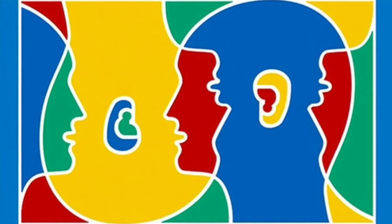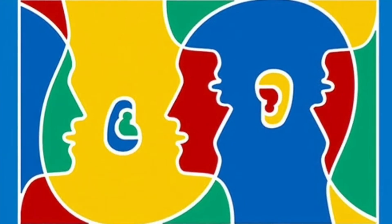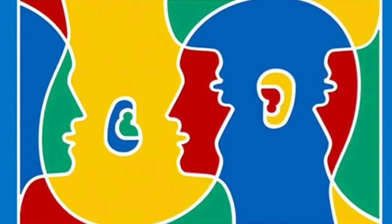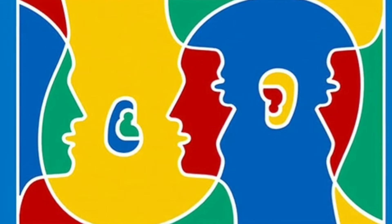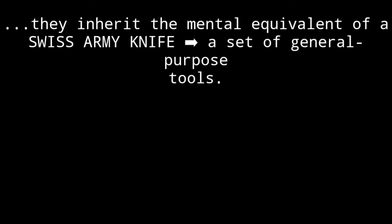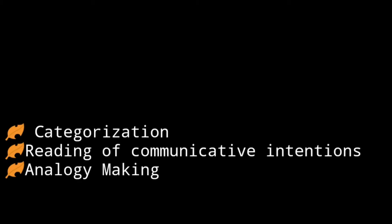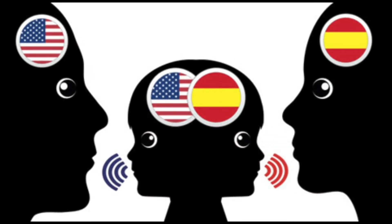Usage-based theory supposes that children are not born with a universal dedicated tool for learning grammar. Instead, they inherit the mental equivalent of a Swiss army knife — that is, a set of general cognitive tools, such as categorization, the reading of communicative intentions, and analogy-making, with which children build grammatical categories and rules from the language they hear around them.